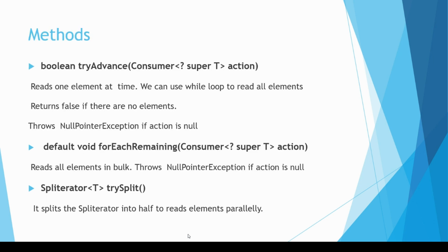Spliterator has many methods, but these three are the most important: tryAdvance, forEachRemaining, and trySplit. tryAdvance takes a java.util.function.Consumer as an argument — it is a functional interface. It reads only one element at a time, so to read all elements you need to use it with a loop. If the element is available it returns true and passes that element to the consumer lambda expression; if there are no elements it returns false.